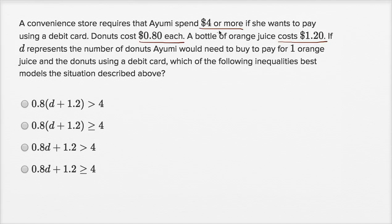All right, so she needs to spend four dollars or more, and she's going to buy one orange juice and D donuts. D represents the number of donuts. So let's write this down.